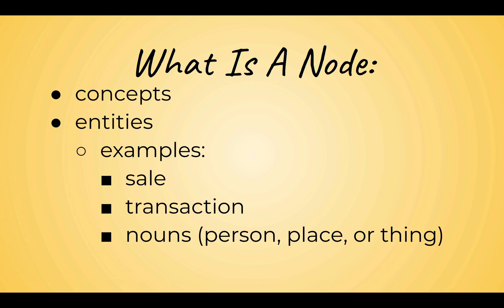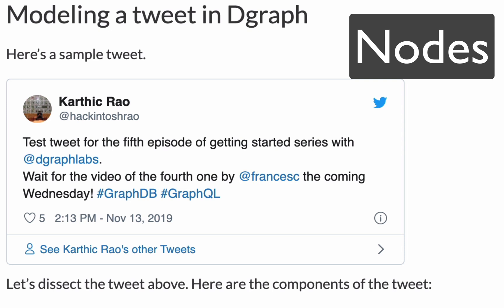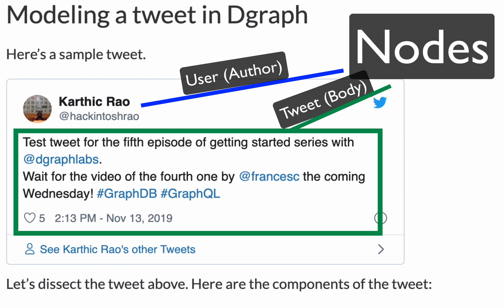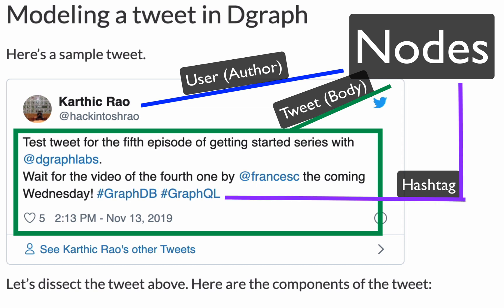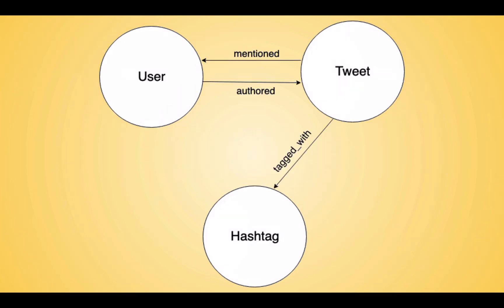Any concept or entity may be represented as a node — be it a tweet, user info, or any concept. If any two nodes are related, we may represent that by creating an edge between them. The nodes of the tweet graph are the author (which is the user), the body of the tweet (we're going to call that the whole tweet), and hashtags. The edges of our tweet graph are authored, mentions, and tagged.